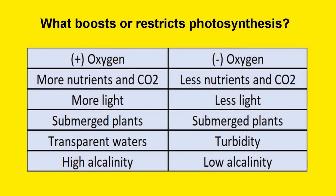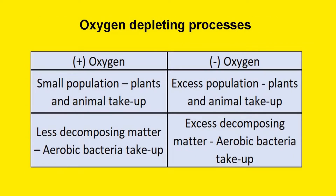What boosts or restricts photosynthesis? The amount of nutrients and carbon dioxide, the amount of light, the amount of submerged plants, the transparency of the water, and the alkalinity. Oxygen-depleting processes include: the size of the population, the take-up of oxygen by plants and animals, and the amount of decomposing matter, meaning the oxygen take-up by aerobic bacteria.